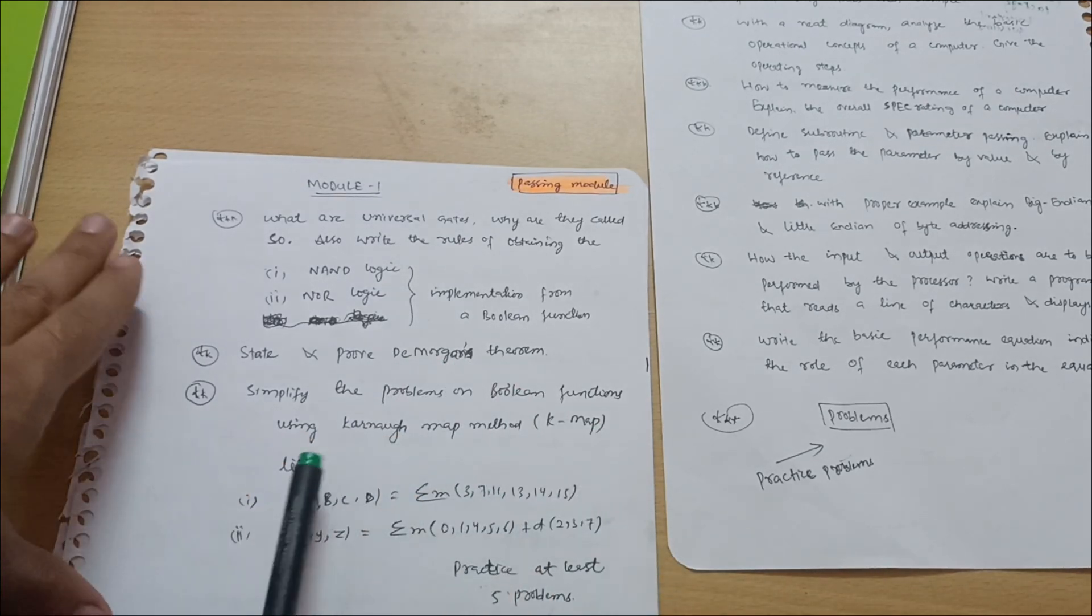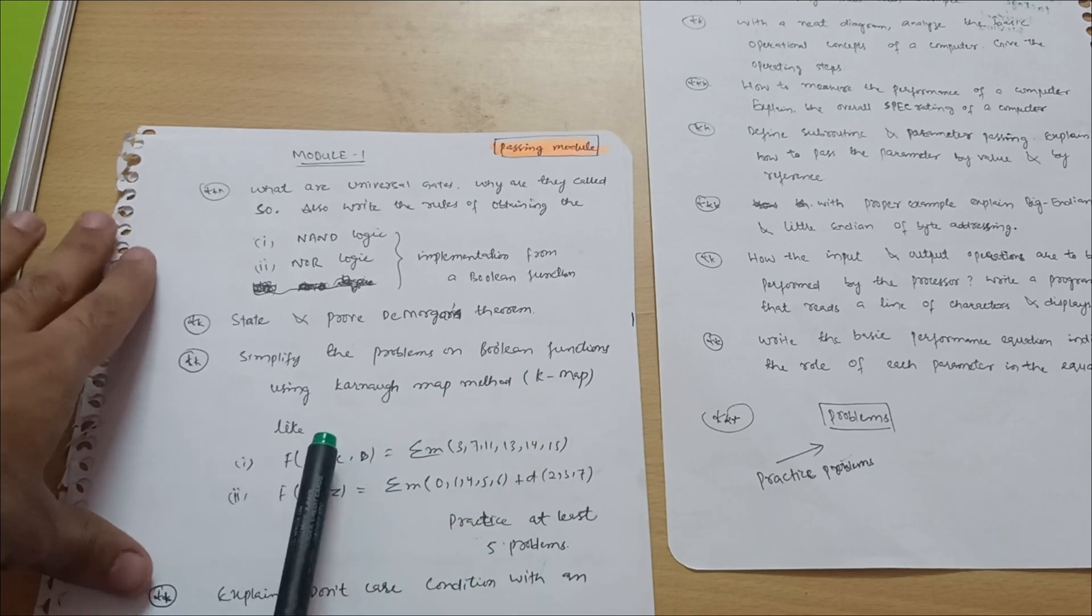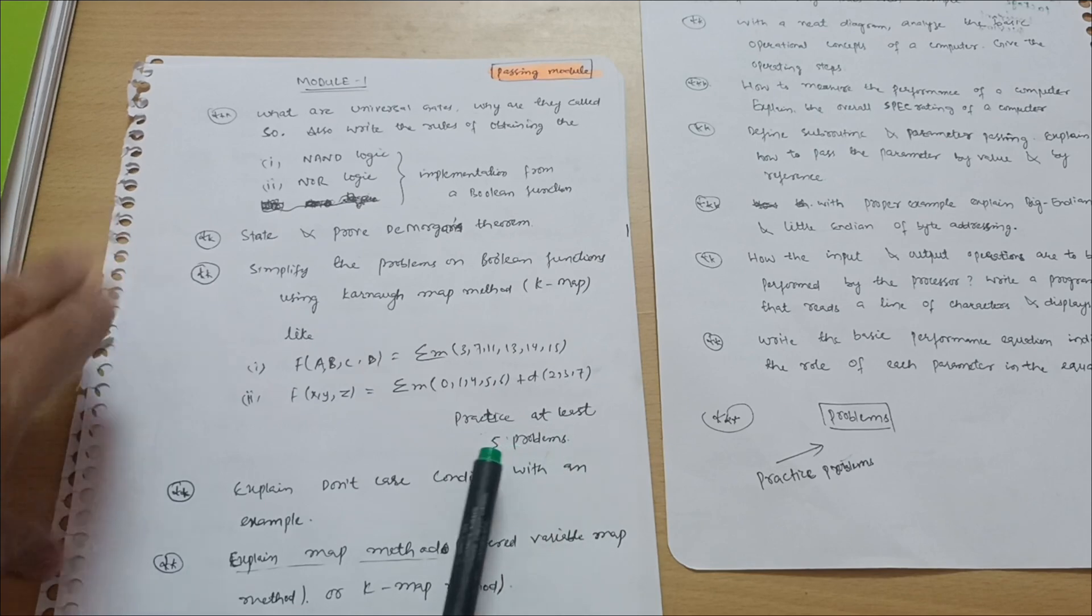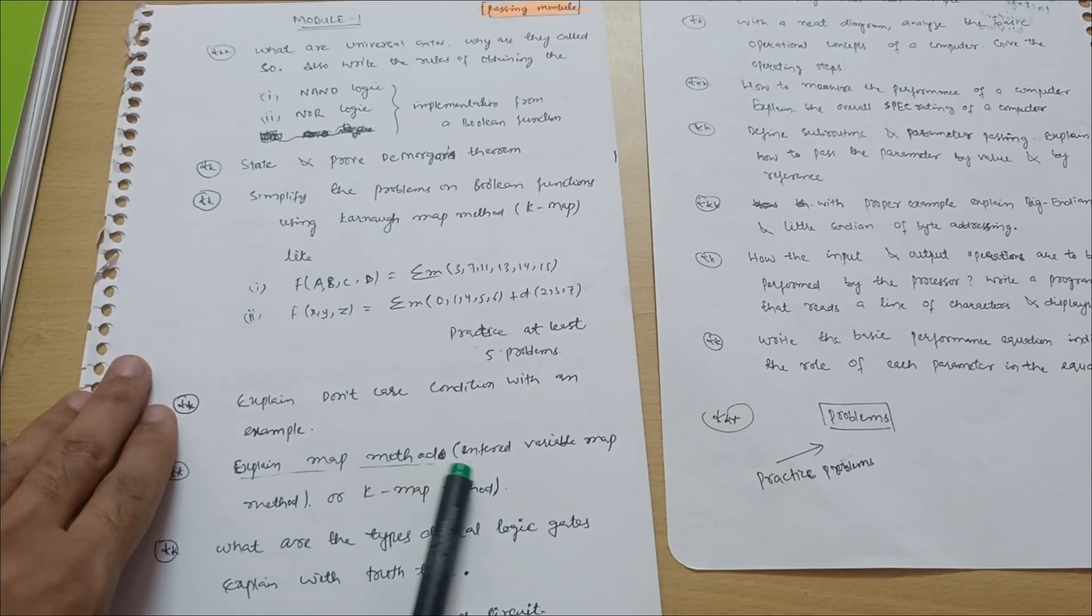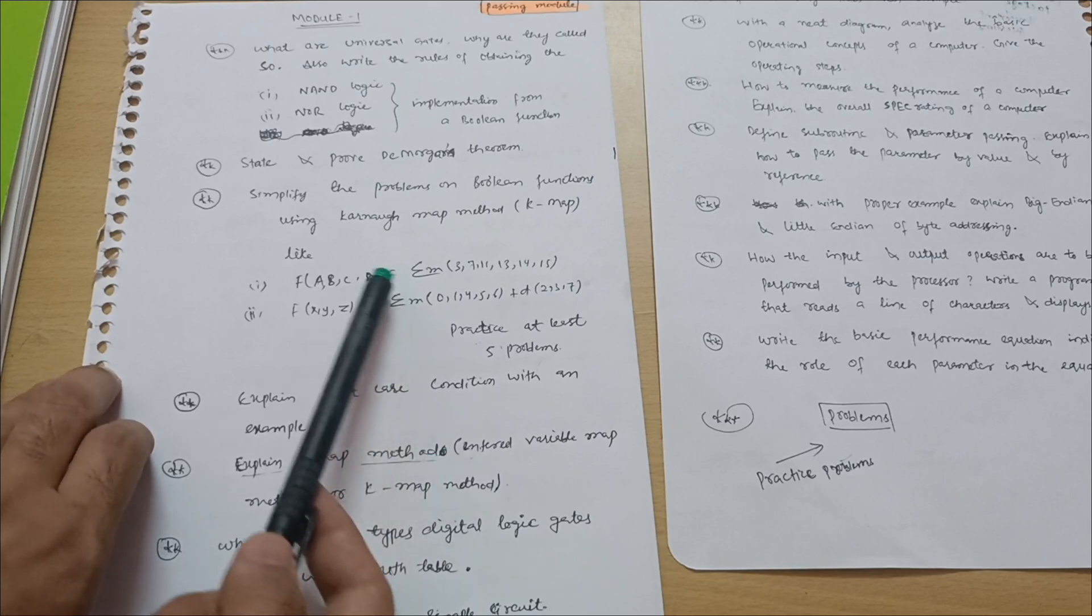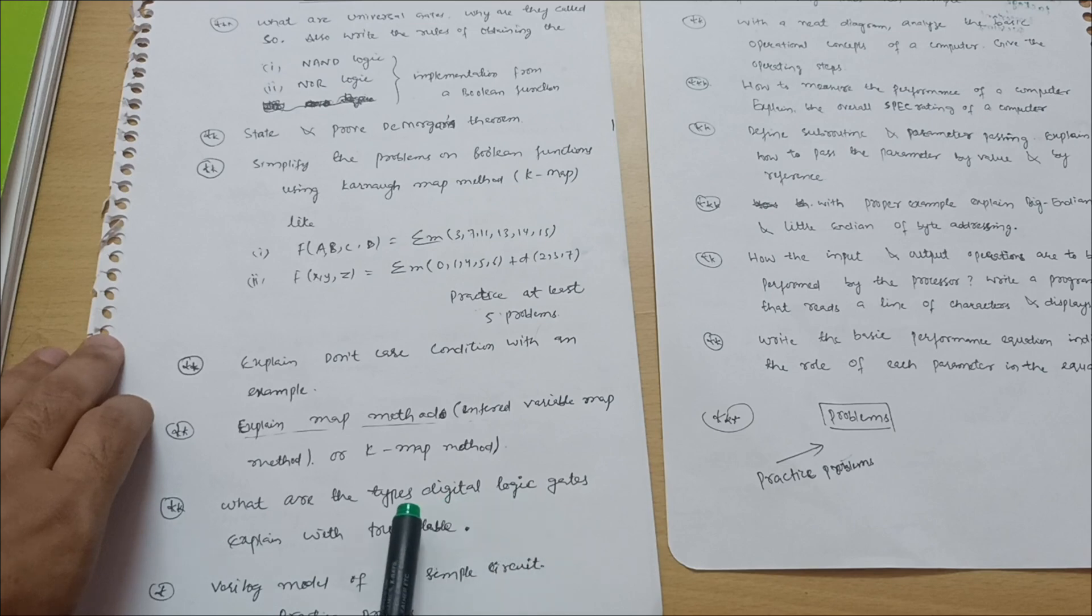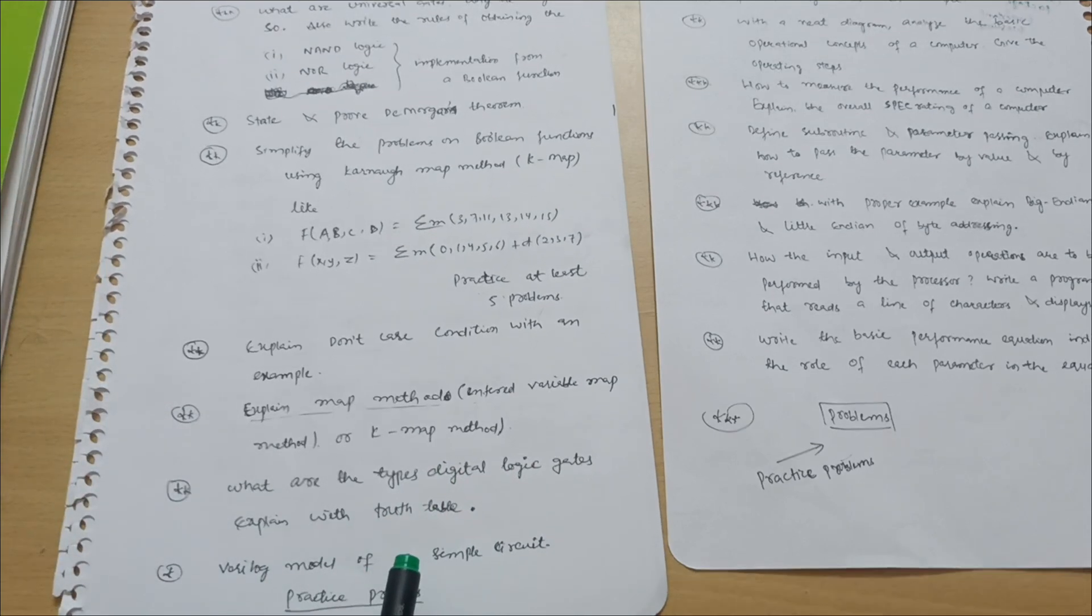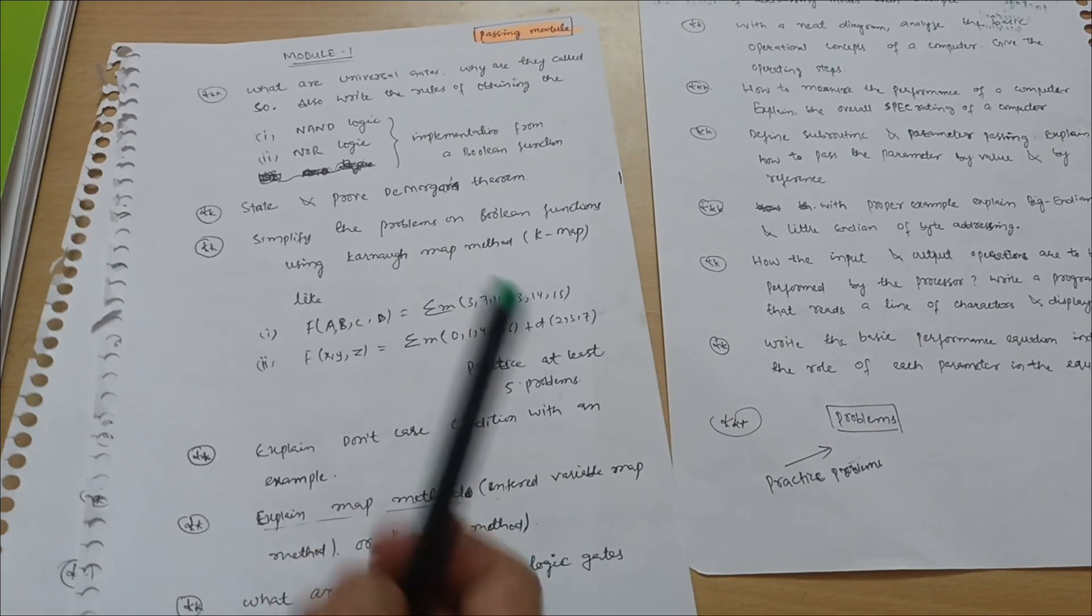State and prove DeMorgan's theorem - it is the most important question. Simplify the problems on boolean functions using Karnaugh map method, that is K-map method. You have to practice at least five problems, very simpler ones. Next is explain don't care condition with an example. Explain map method, it is also called as intervariable map method or K-map method simply, on the basis of which there are questions also. What are the types of digital logic gates? Explain with truth table. Verilog model of a simple circuit - you have to give explanation of this particular model and also practice the problems on the above mentioned.